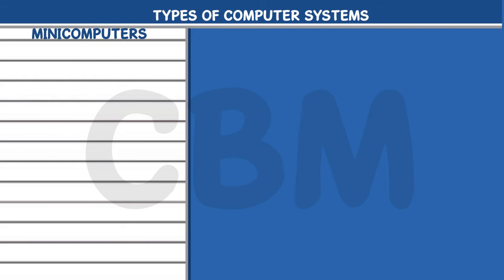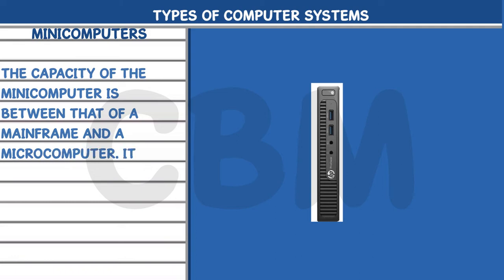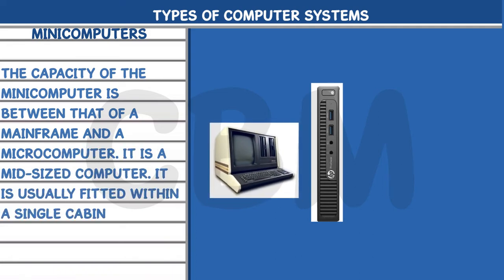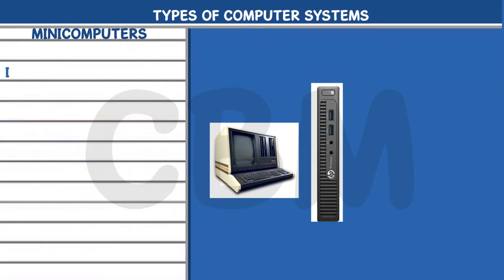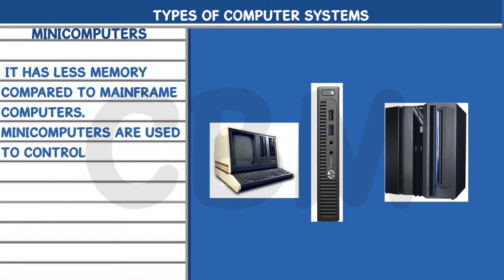Mini Computers: The capacity of the minicomputer is between that of a mainframe and a microcomputer. It is a mid-sized computer, usually fitted within a single cabinet, about the size of a refrigerator. It has less memory compared to mainframe computers, and is used to control machines in a manufacturing unit.